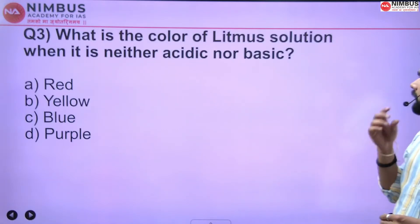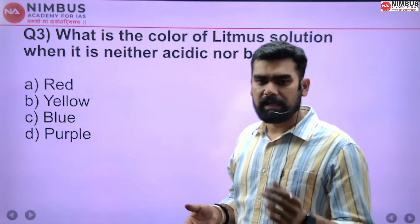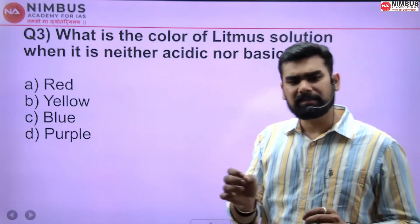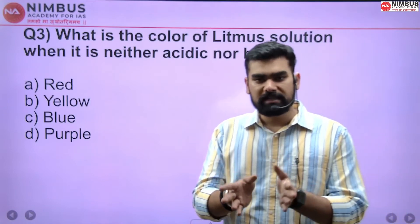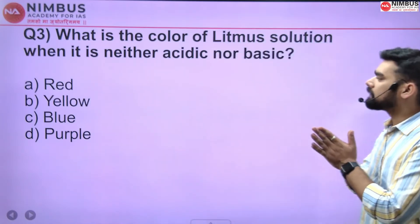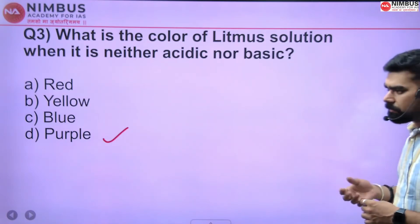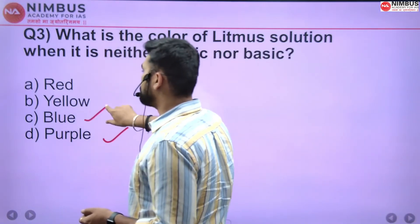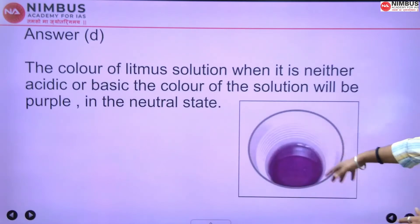What is the color of litmus solution when it is neither acidic nor basic? Litmus solution, as we know, is an acid-base indicator. In acidic medium it gives one color, in basic medium another. But in the neutral state, litmus shows purple color. Acid turns blue litmus red, and base turns red litmus blue. The right answer is purple.